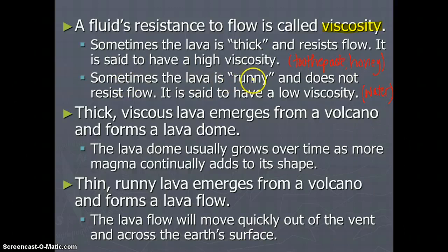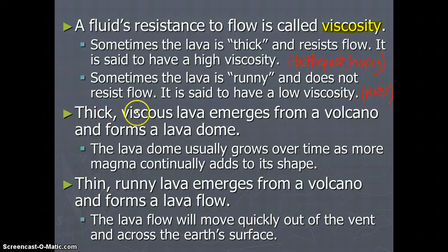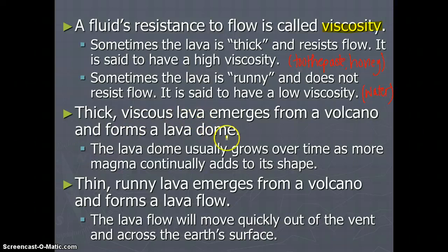Other times, the lava is runny and does not resist flowing, and it's said to have a very low viscosity. Water has a very low viscosity. Thick, viscous lava that emerges from a volcano will form a lava dome. The lava dome usually grows over time as more magma continually adds to its shape. Because this lava doesn't want to run all over the place, it makes a big bubble — we call that a lava dome.